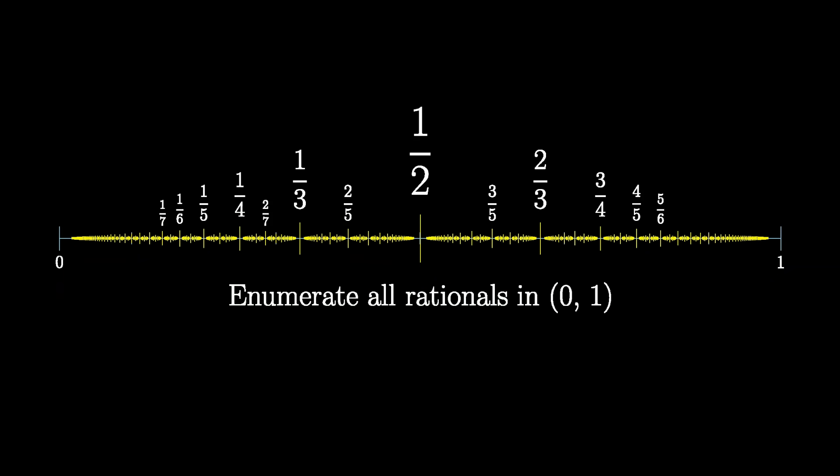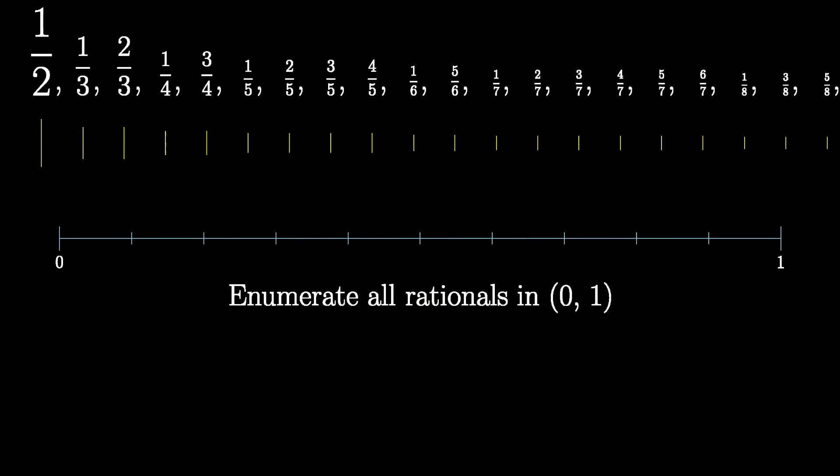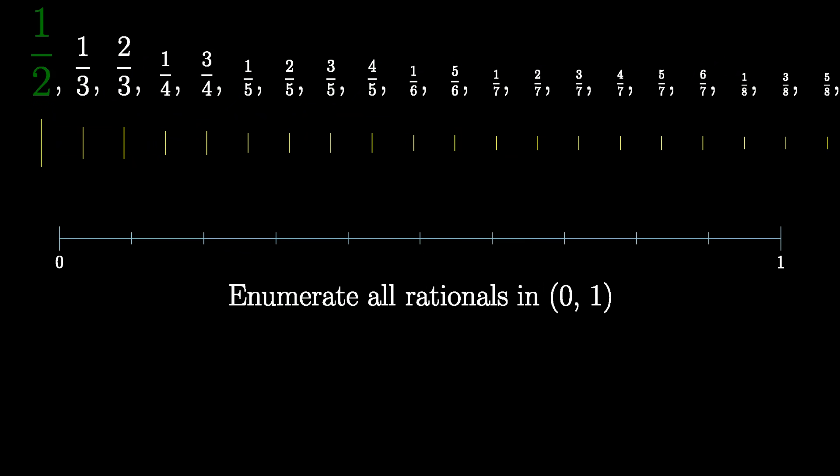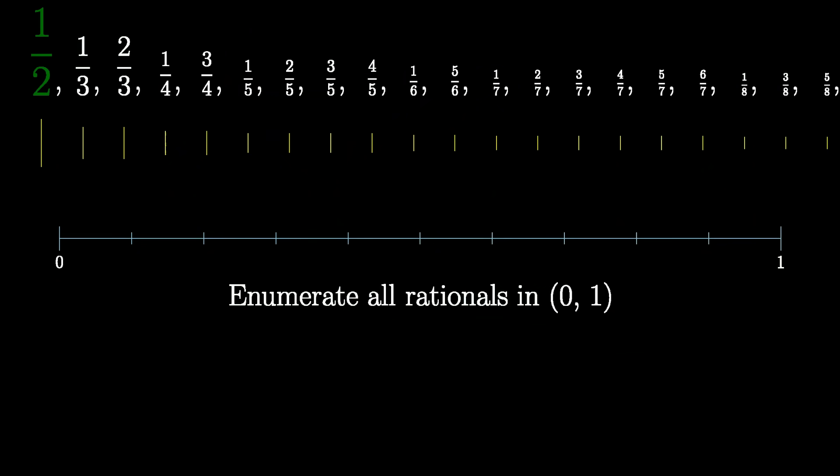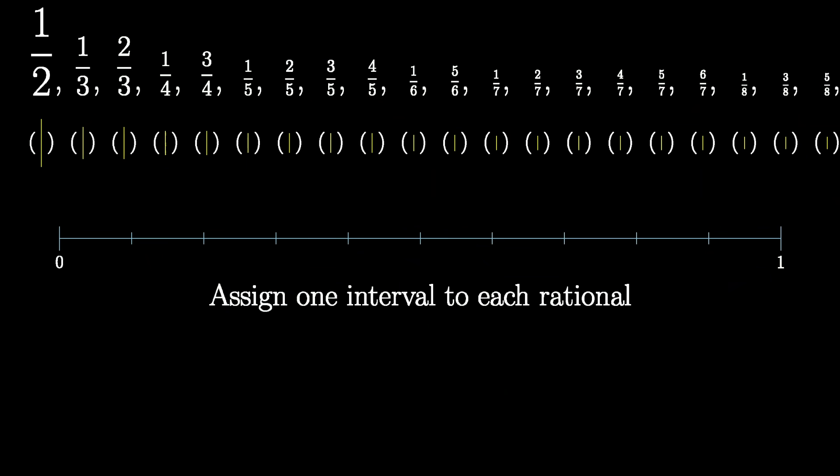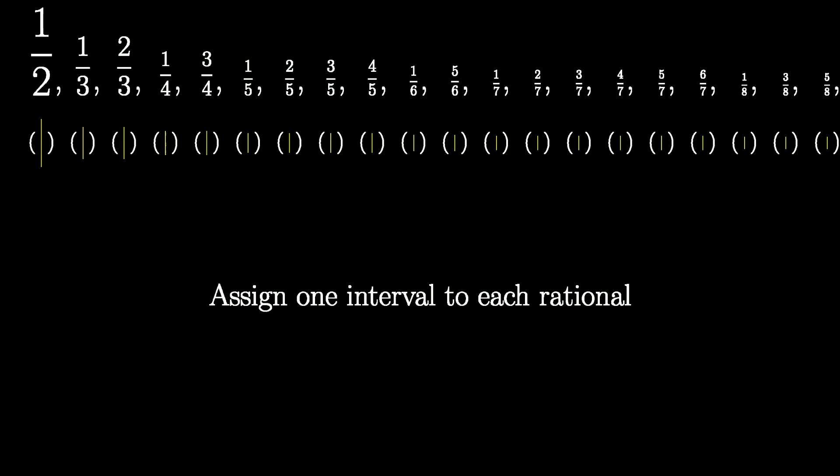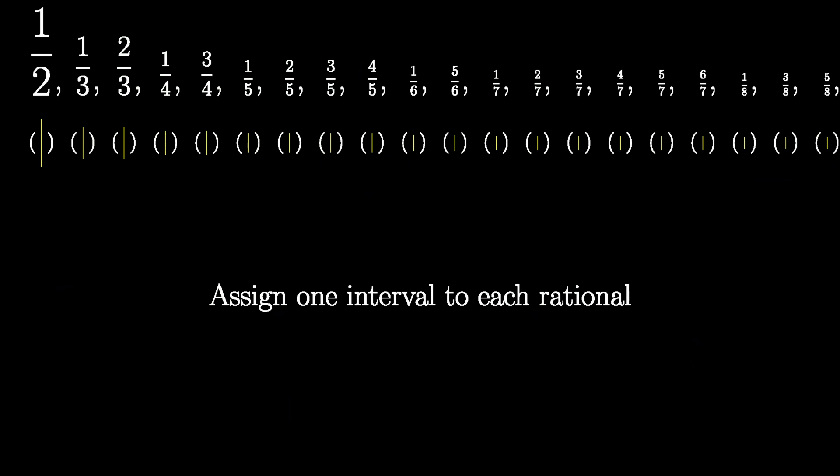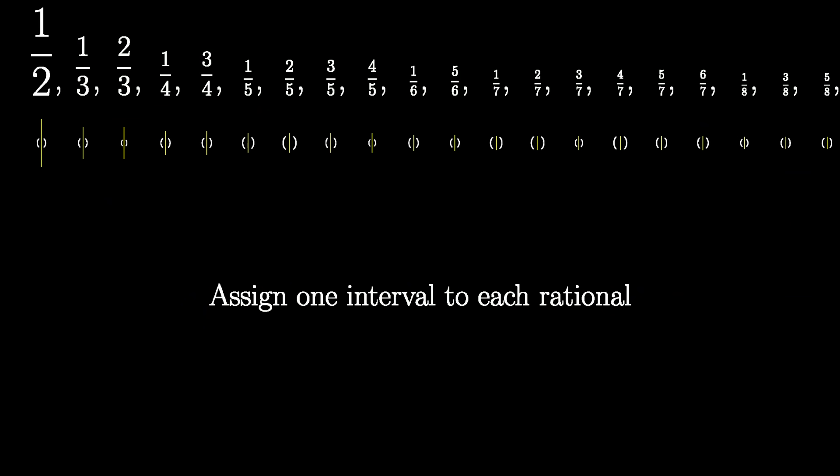First, we enumerate the rational numbers between 0 and 1, meaning we organize them into an infinitely long list. There are many ways to do this, but one natural way that I'll choose is to start with 1 half, followed by 1 third and 2 thirds, then 1 fourth and 3 fourths (we don't write down 2 fourths since it's already appeared as 1 half), then all reduced fractions with denominator 5, all reduced fractions with denominator 6, continuing on and on in this fashion. Every fraction will appear exactly once in this list in its reduced form, and it gives us a meaningful way to talk about the first rational number, the second rational number, the 42nd rational number, things like that. Next, to ensure that each rational is covered, we're going to assign one specific interval to each rational. Once we remove the intervals from the geometry of our setup and just think of them in a list, each one responsible for one rational number, it seems much clearer that the sum of their lengths can be less than 1, since each particular interval can be as small as you want and still cover its designated rational.